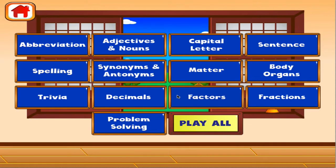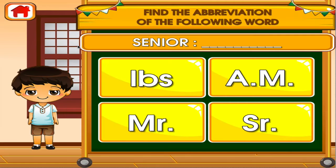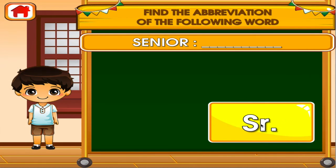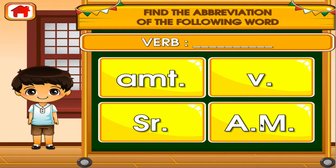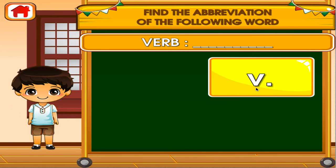Choose the activity you want to play. Abbreviation. Tap the correct answer. Woohoo! Tap the correct answer. Good job! That's another right.